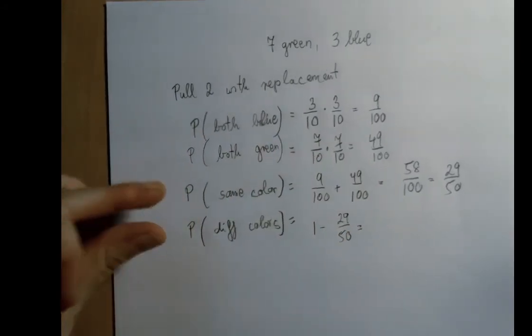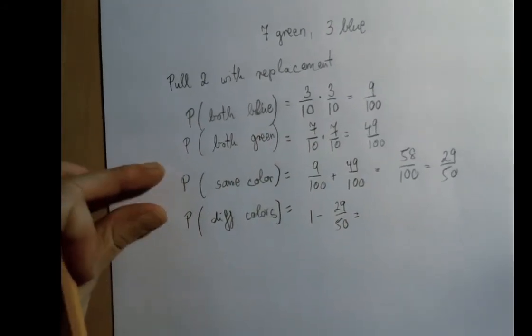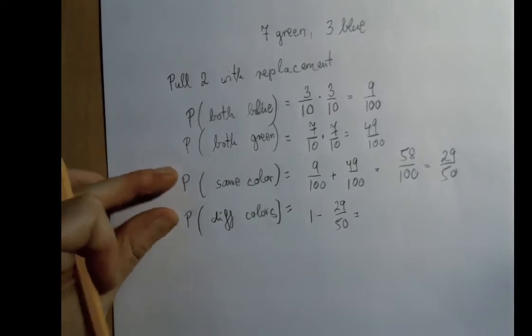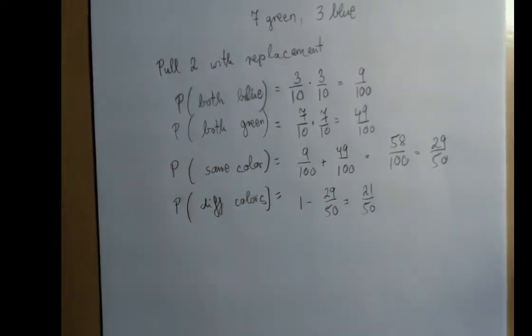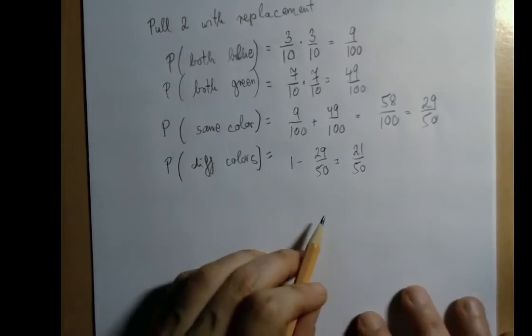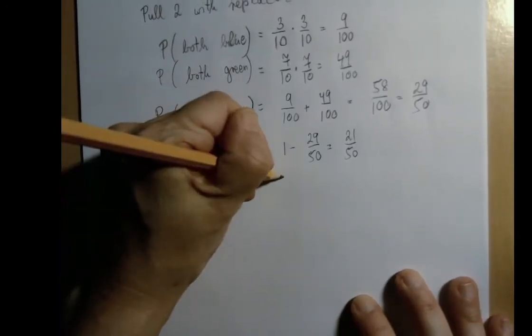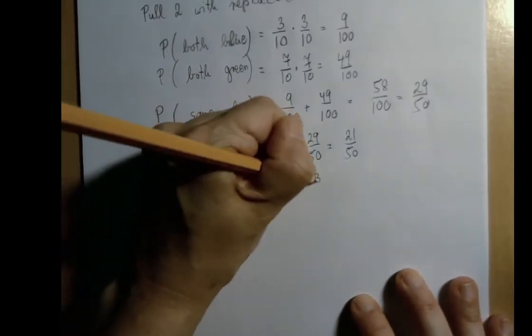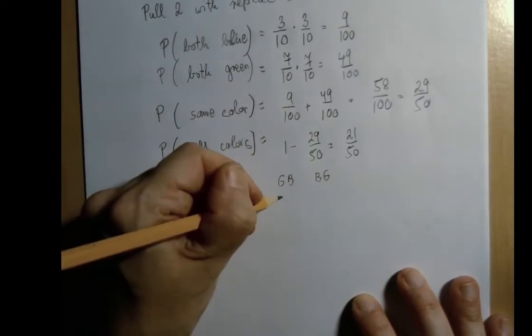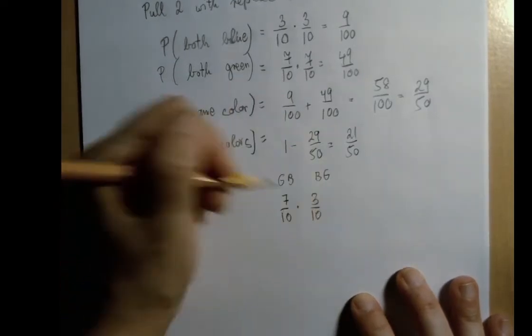These two probabilities, because they cover every case without overlap, they should add up to 1. And this is what we're exploiting here. We can also get the same probability by saying, well, I want green first, then blue, or blue first, then green. And these are the two ways we can have different colors.